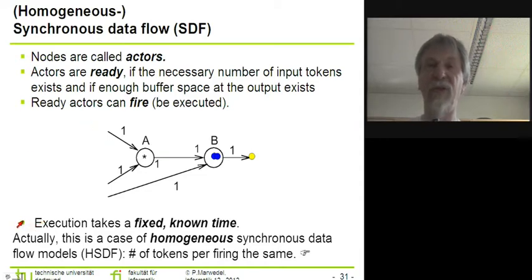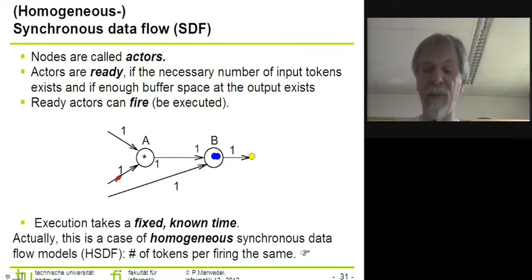We know, in contrast to Kahn Process Networks, that the execution of the code linked to these actors will take some time. Now actually, the example that I demonstrated is a special case of Synchronous Dataflow. It is the special case of so-called homogeneous Synchronous Dataflow. It's homogeneous because all these edges are labeled with the same weight, which means that the number of tokens that are consumed per firing is always the same.